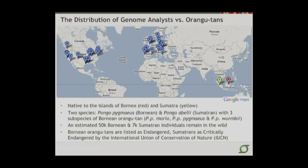In total, this is a very stressed population group regardless of which one you're talking about. There are an estimated about 50,000 Bornean and only 7,000 Sumatran individuals remaining in the wild. According to these very small and ever-dwindling numbers, we see that the Borneans are listed as endangered, and the Sumatran orangs as critically endangered.